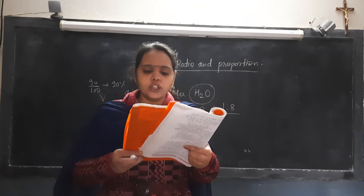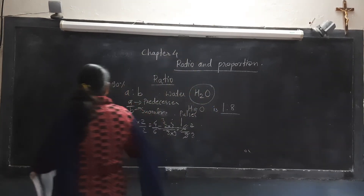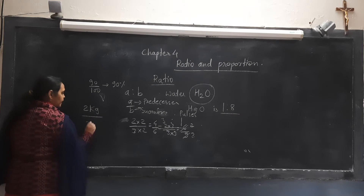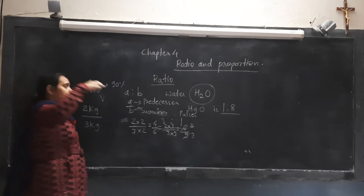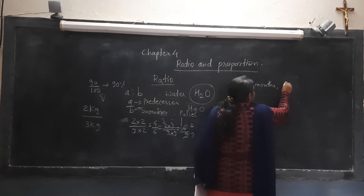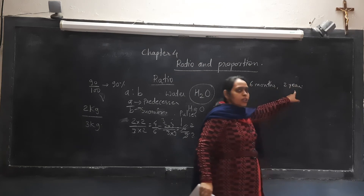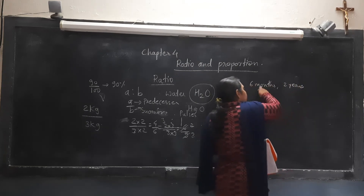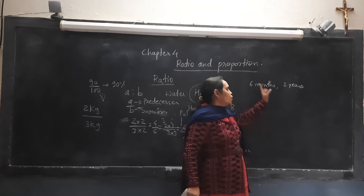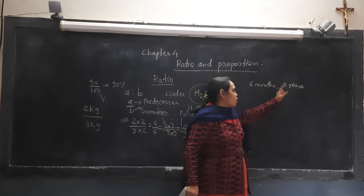The fourth property: the quantities taken in the ratio must be expressed in the same unit. This is an important part. If we take one quantity in kilograms, the other quantity must also be taken in kilograms. For example, if we have 6 months and 2 years, we must convert 2 years also into months, or convert 6 months into years. Both terms must be in the same unit - either both in years or both in months.